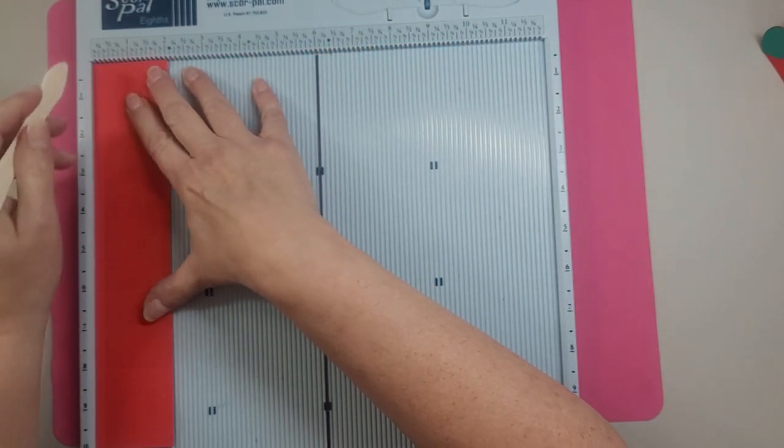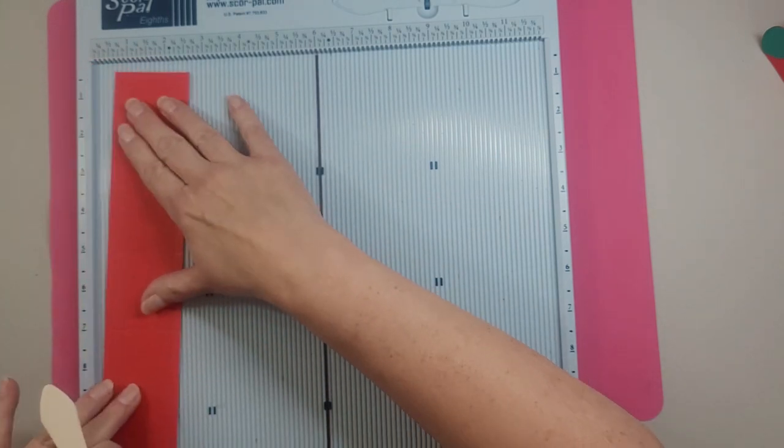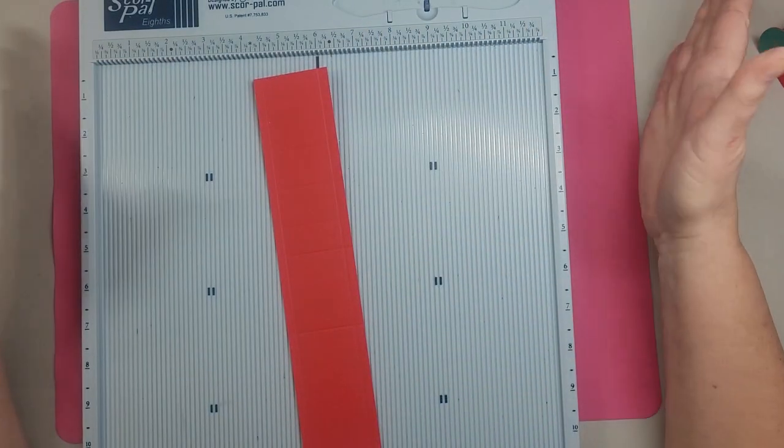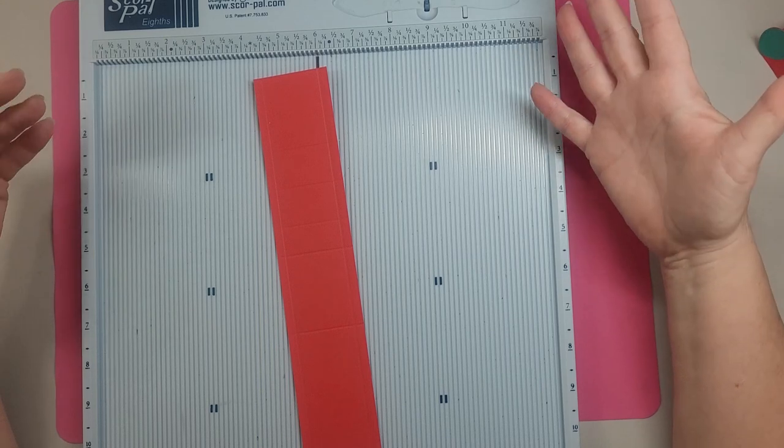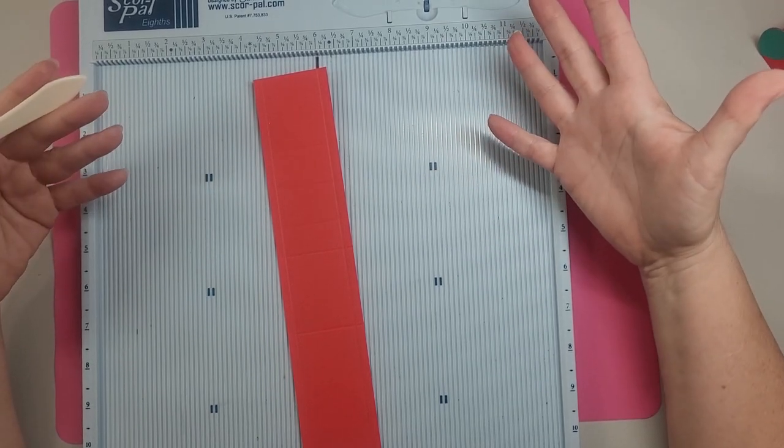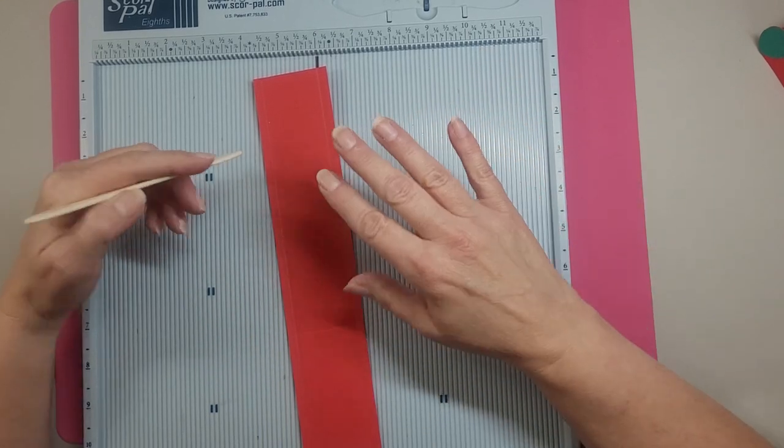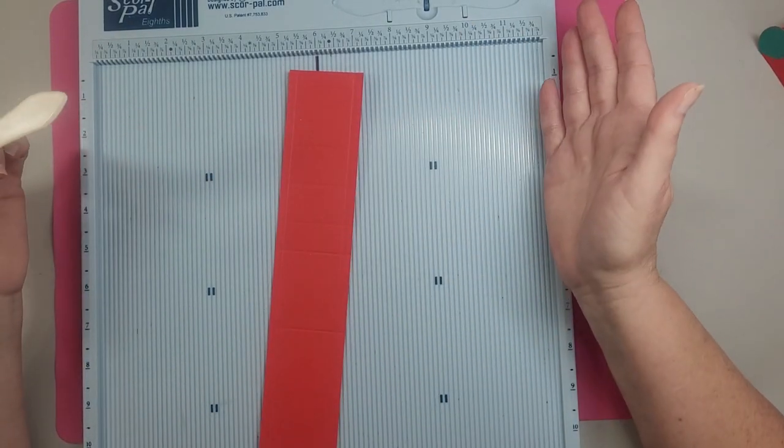Now we're going to come down the side and we're going to score a quarter inch down each side. And I'm going to do it this way so if you changed how wide you want to make your basket, I mean your basket, your treat bag, basically you're just going to add a half an inch. So if you want one that's three inches wide, you need a paper that is three and a half inches wide and you'll just score a quarter inch on each side.